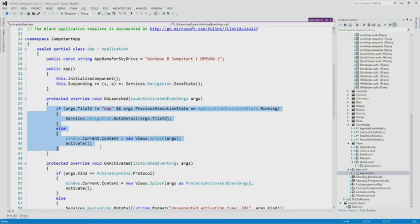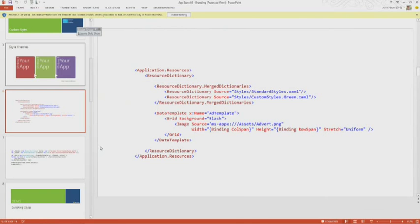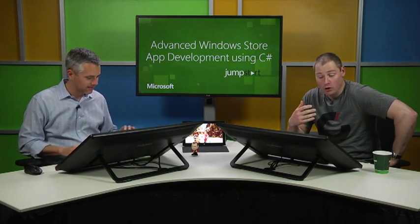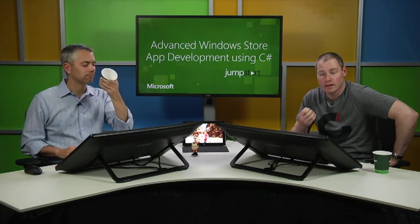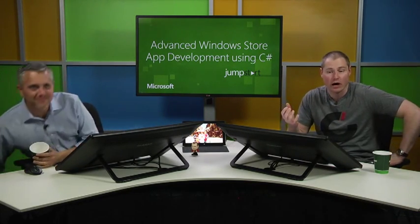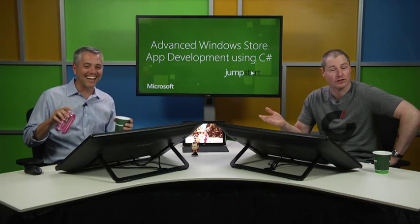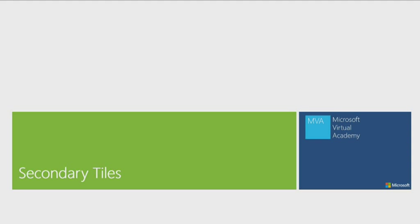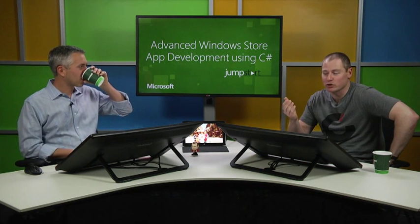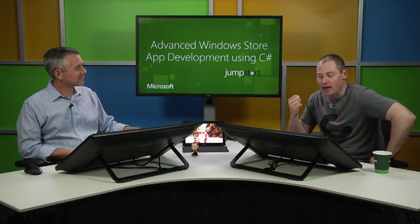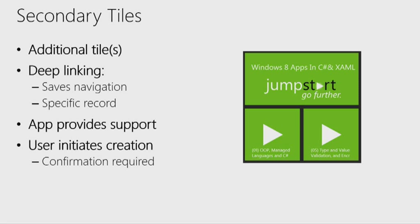So talk to me about tiles — how would I use a tile in the first place? When we install a Windows Store app, the application creates a primary tile that exists on the start screen. Let's talk about secondary tiles. When we install an application from the Store, the infrastructure and the environment creates for us a primary tile for the application — every app has its primary tile. We can't influence that directly in terms of what's being created. We can create live tiles, and we touched on those in previous sessions.